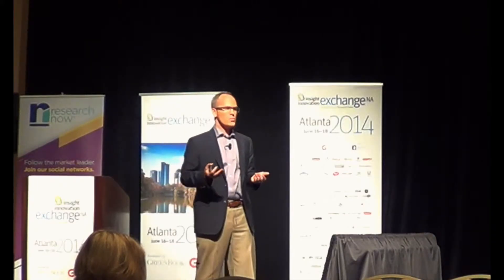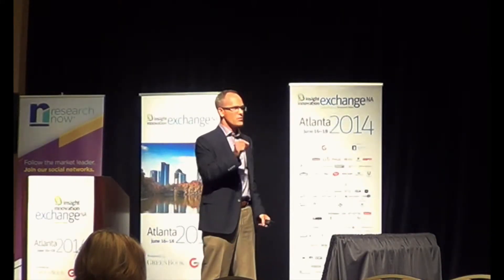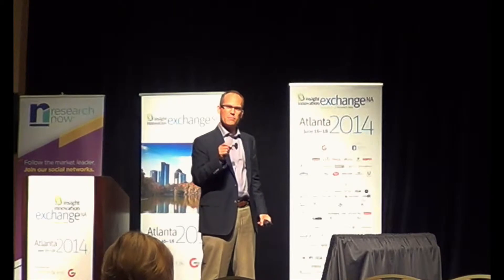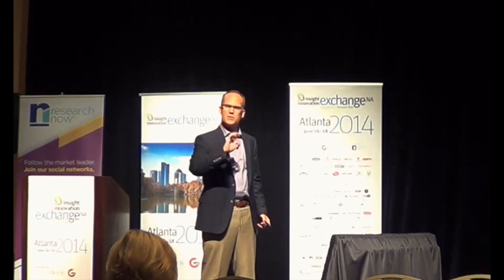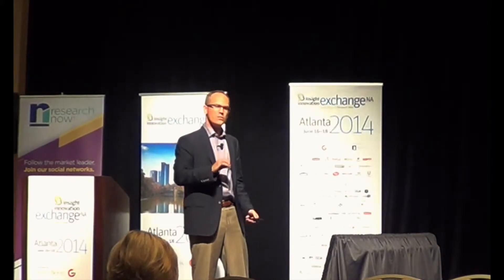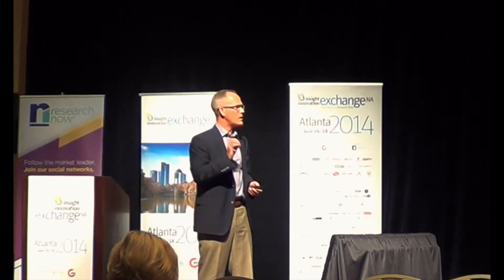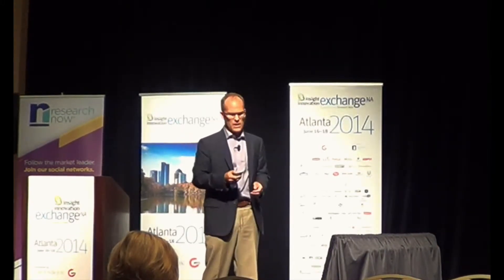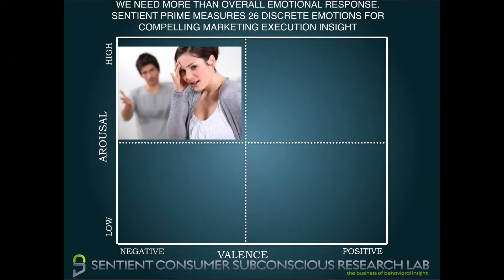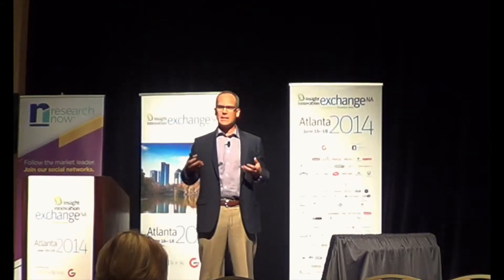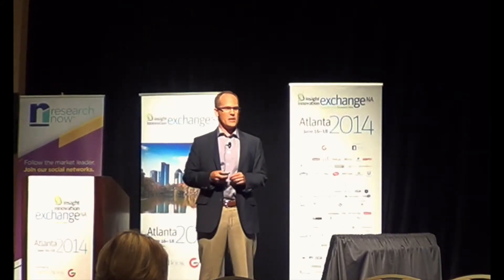As marketers, we need more information on the discrete or distinct emotion that our brands, our products, our packaging are evoking — rather than just overall positive, negative, or high arousal, low arousal. We want to understand the nature of the emotion. For example, upper left-hand corner: an emotion that might fall into that quadrant could be shame. That's a high arousal emotion, and that's negative in valence.